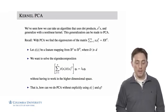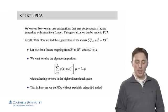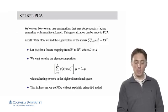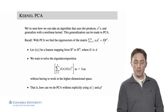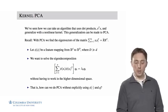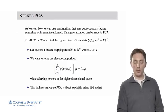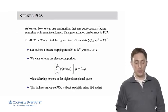Recall with PCA that what we do is we take each data point x_i, we take its outer product with itself, and sum them up and represent that as this matrix product. The matrix X had each x_i along its column. We took XX transpose, and then we found the eigenvectors of this matrix.